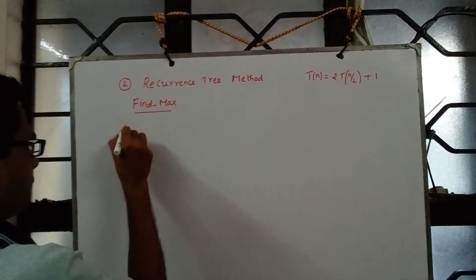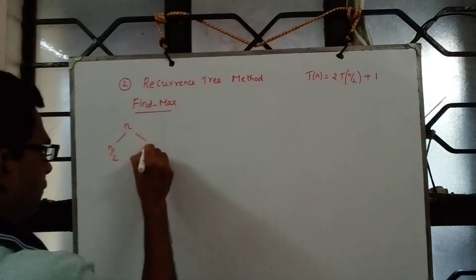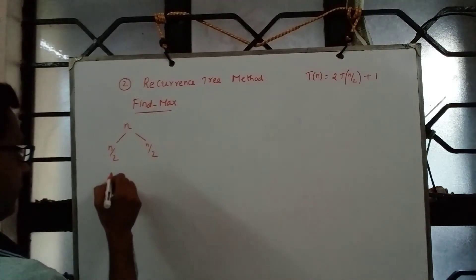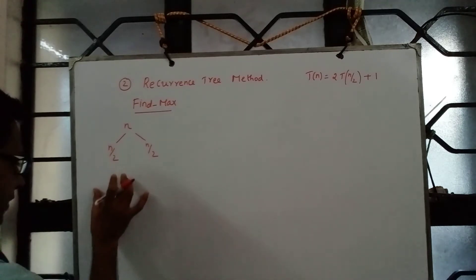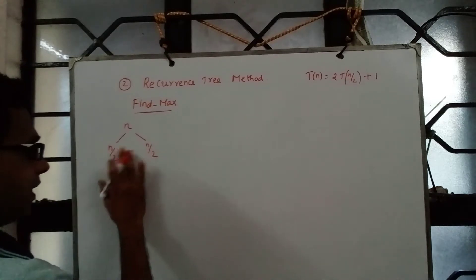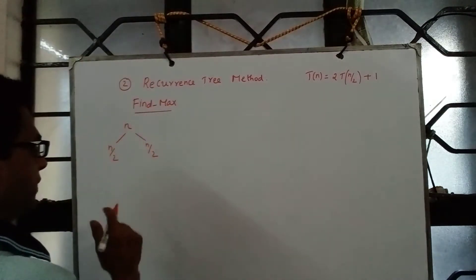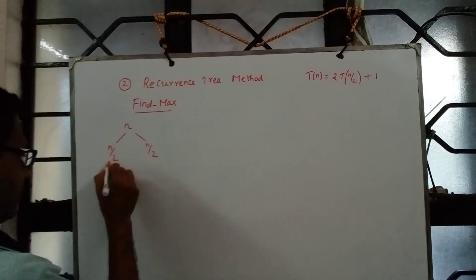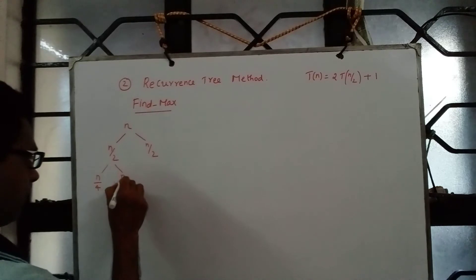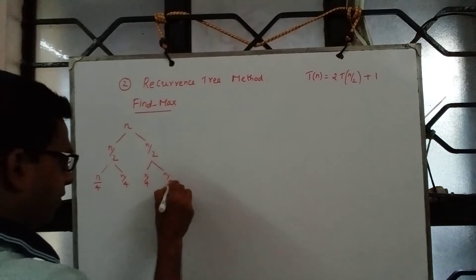The idea is: you have n elements which we divide into two subproblems each of size n/2, then recursively find max from each half, then make one comparison to return max. How do we find it recursively? This is again divided into n/4 and n/4, and this is again divided into n/4 and n/4.